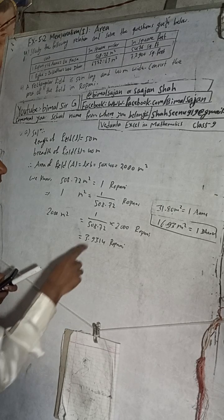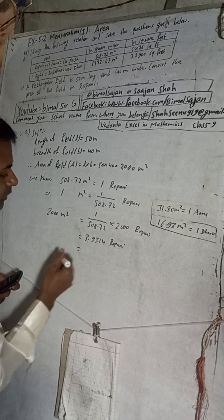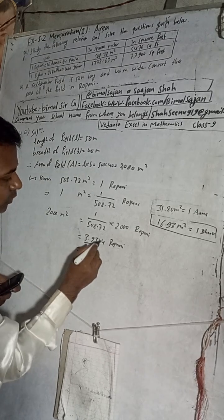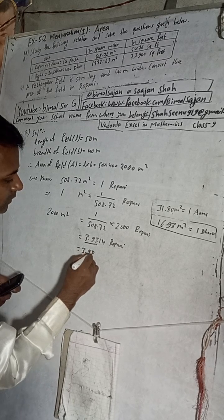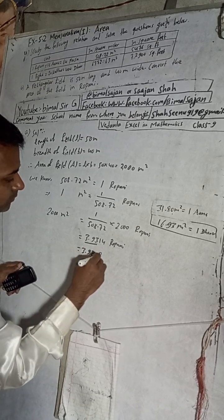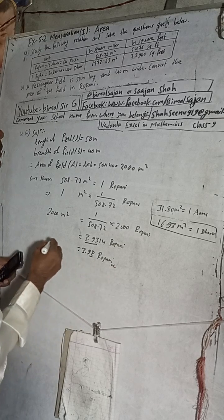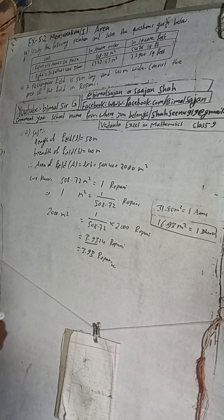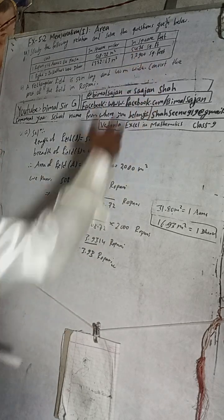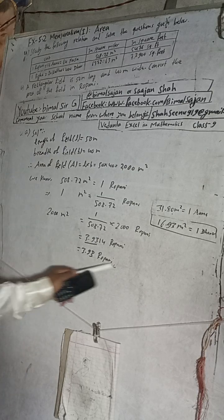In the book the answer given is 3.93 ropni. So to convert the area of the field into ropni: the area of the field in ropni is equal to 3.93 ropni. This is the solution.